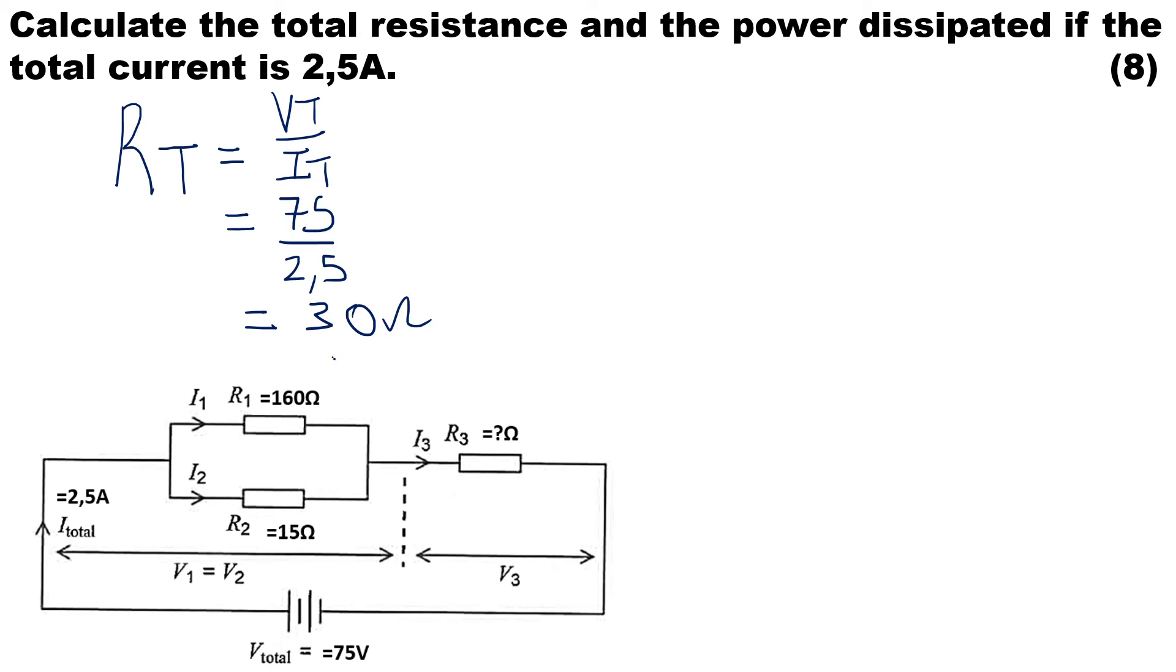You would have got four marks for this question. Now to calculate the power dissipated, power, the symbol is P and the units is watts. We need to calculate the total voltage multiplied by the total current. Once again, that's given to us. The total voltage is 75 volts and the total current is 2.5 amps. Therefore, the power is 187.5 watts. As you can see, that was a nice quick easy question to answer for eight marks in the exam paper.